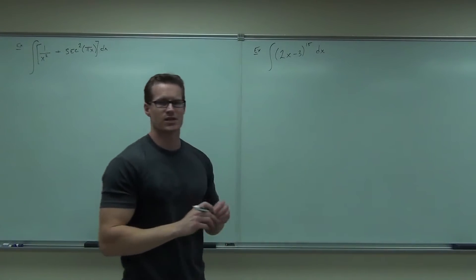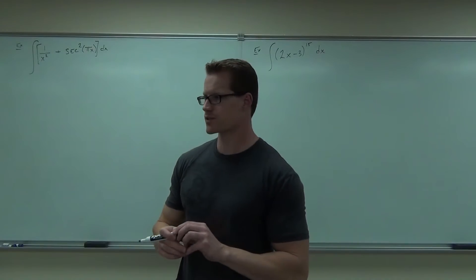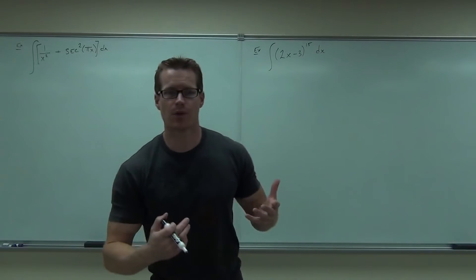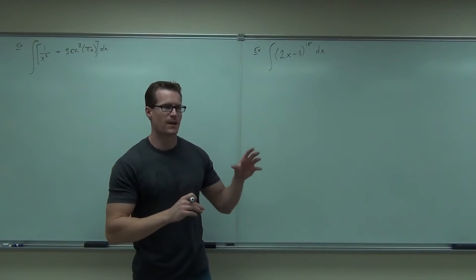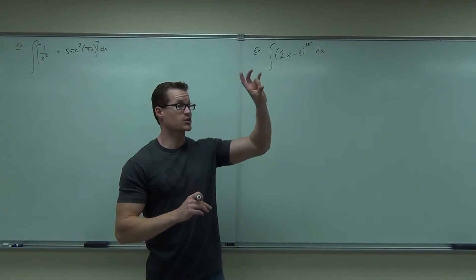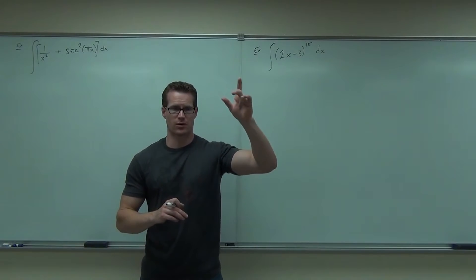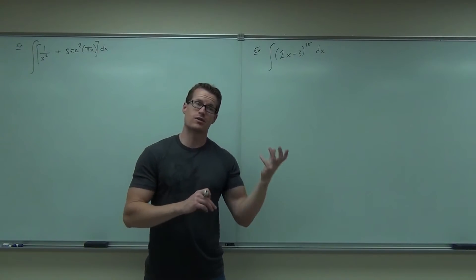Well, I hope for you in this case that the u is fairly obvious in this one. The u is the only thing there. The only thing I wanted to make sure you see here is do you take the exponent when you're picking a u? Do you ever take the exponent with it? No, because the derivative has to be there, right?